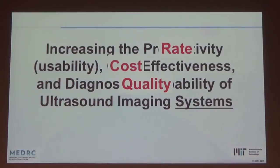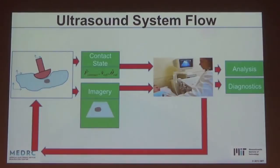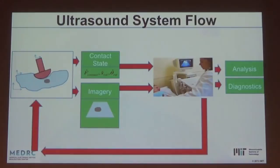In the ultrasound system flow, you have a sonographer holding a probe, interacting with a patient, implicitly controlling the contact state — the force being applied, the location, orientation, and position of the probe on the patient's body — acquiring imagery, looking at it, doing real-time interpretation and analysis. What I want to do is better understand and control that system flow, to give automatic guidance to the sonographer and the probe, to eliminate variability. Once you can better control and measure the acquisition state, you can use that information in elastography or other mechanisms to get enhanced information out of the imagery.